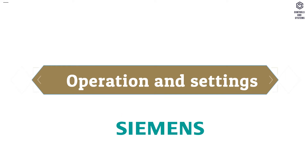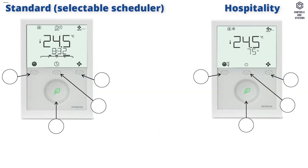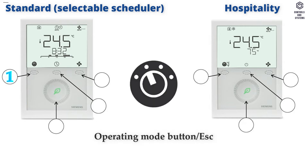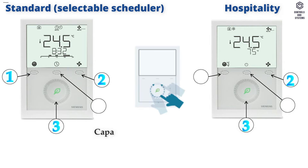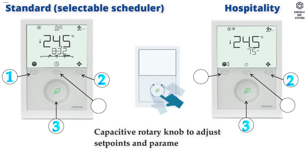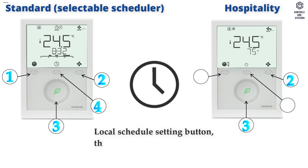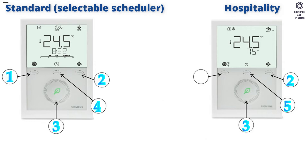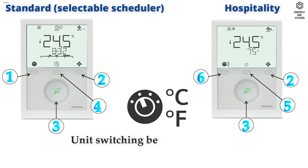Operation and Settings modes: Standard, Selectable Scheduler, and Hospitality. Button 1 is the Operating Mode Button or Escape. Button 2 is the Fan Mode Button or OK. Button 3 is the Capacitive Rotary Knob to Adjust Set Points and Parameters. Button 4 is the Local Schedule Setting Button when the schedule is enabled. Button 5 is the Protection/Hospitality Medium Mode Button. Button 6 switches the unit between Celsius and Fahrenheit.